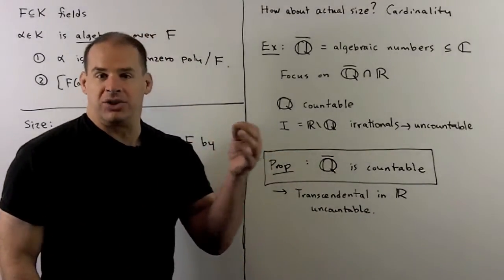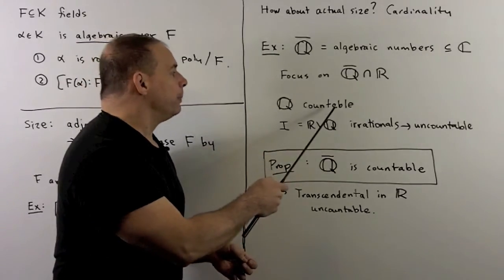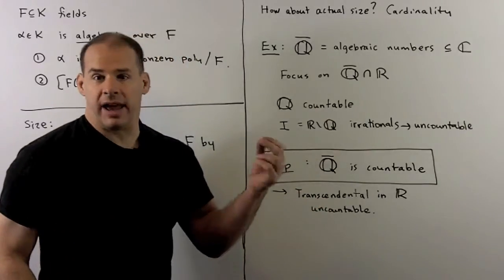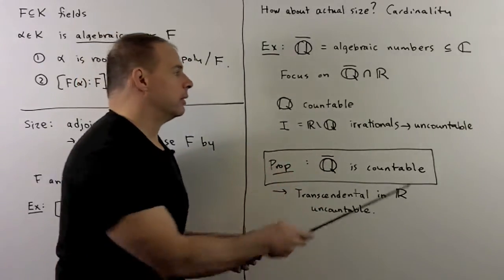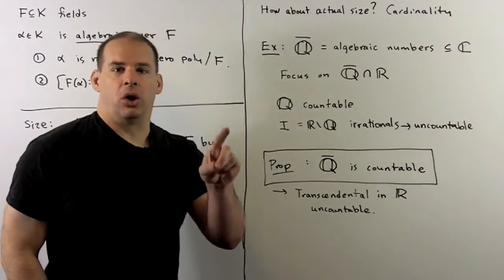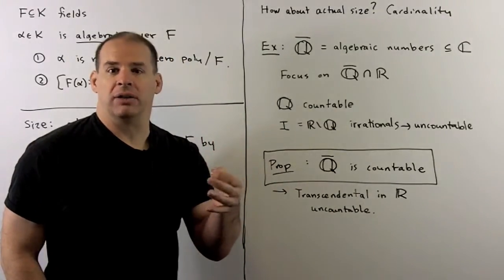Let's consider the algebraic numbers that are also real. If we go back to basic cardinality, we have that the rationals are countable. So the complement, the irrationals, will be uncountable in the reals. Now, the question we can ask, how much control can we get over the irrationals by using field extensions?